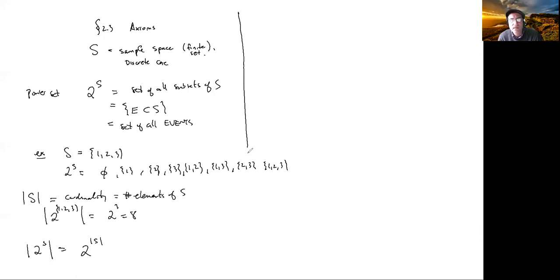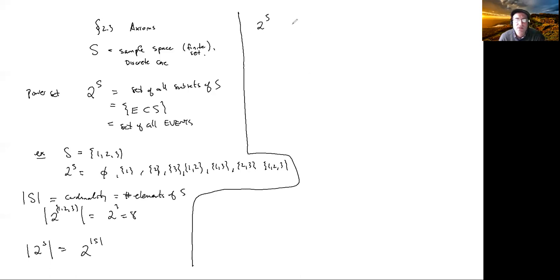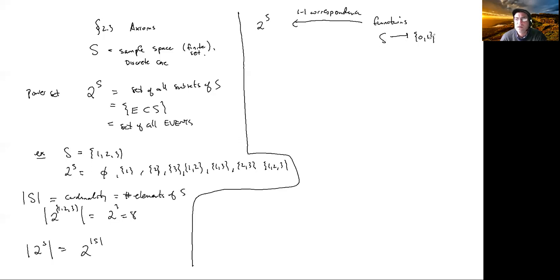So how can we understand this power set 2^S? I claim it is in bijection — in one-to-one correspondence — with functions from S to {0,1}. So what's a function? You have an input and you have an output. Here the outputs are 0 and 1, so it takes an input from S and produces either 0 or 1. Here's the reason.